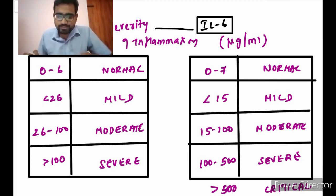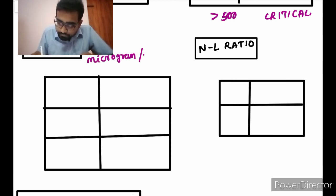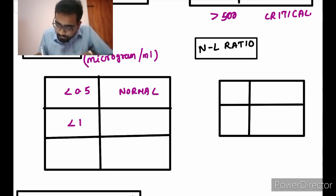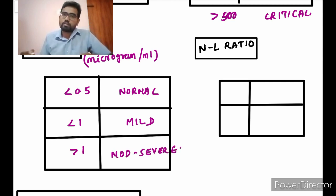Both CRP and interleukin-6 detect the severity of inflammation. Next, D-dimers are measured in micrograms per mL. Values of less than 0.5 are normal; any value less than 1 is mild; and if it is more than 1 then that is moderate to severe.